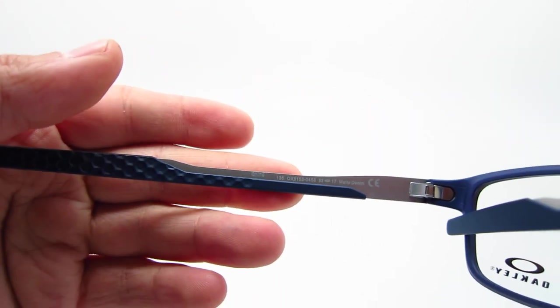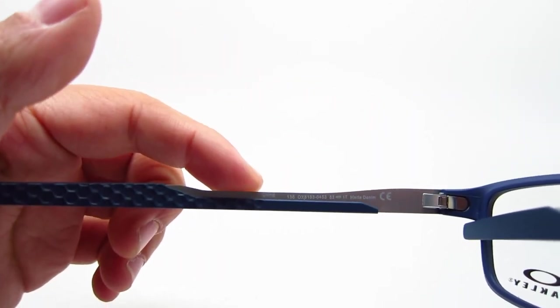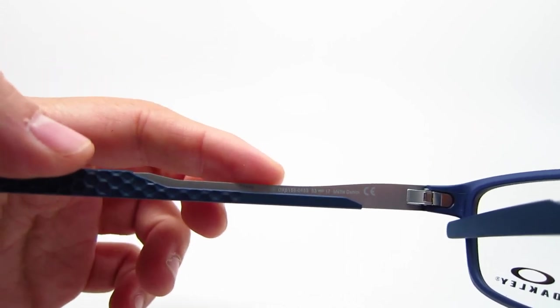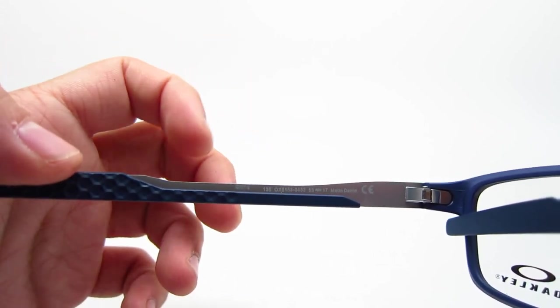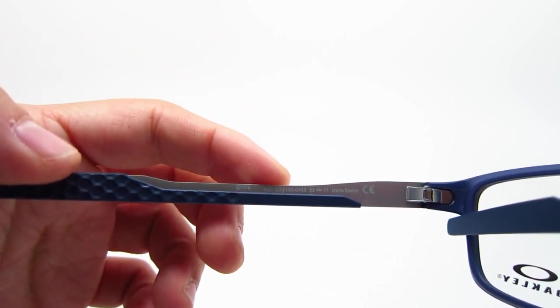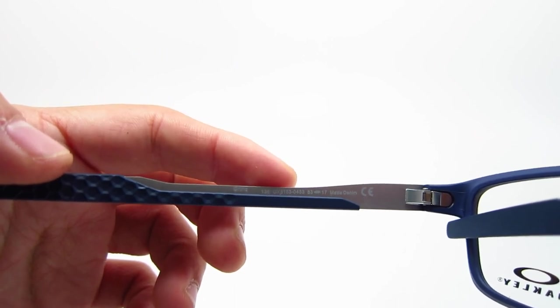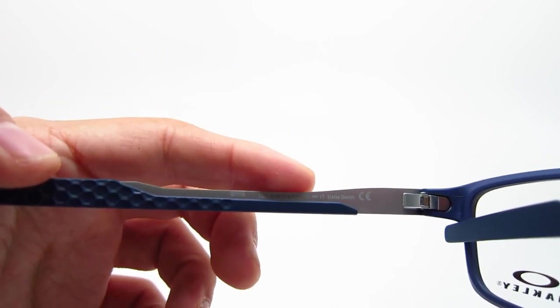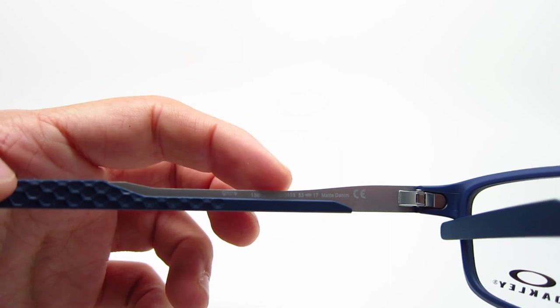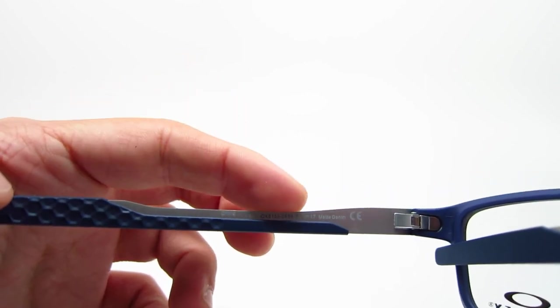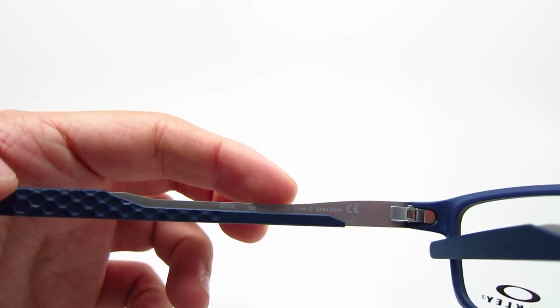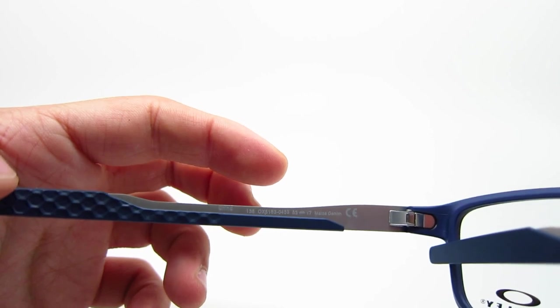So let me show you the sides. So it does say China, because most Oakleys are made in China. It has the model information. OX8153-0453. With the codes at the end, 04 is the color, 53 is the lens size. And if you chose 55, it's going to be 0455.